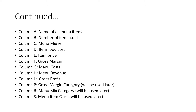Column L is the gross profit, column P is the gross margin category, and column R is the menu mix category — both of which will be used in the next slide — and column S is the menu item class, which will also be used in the next slide.